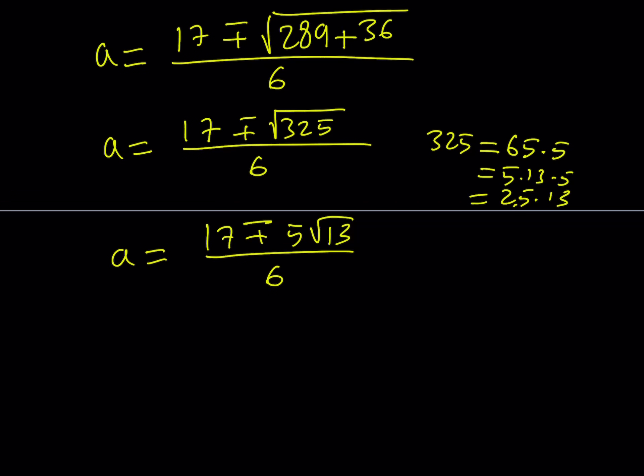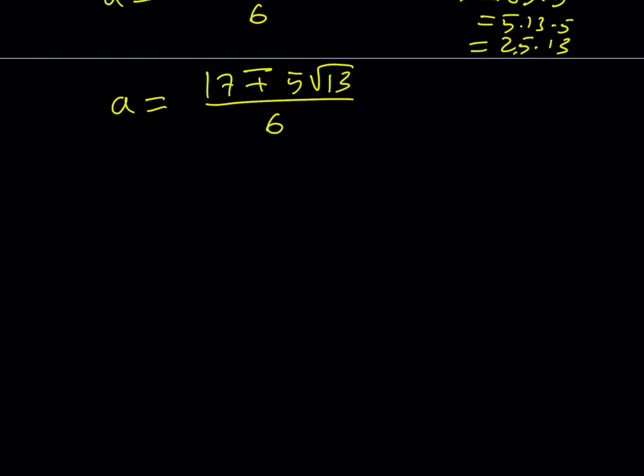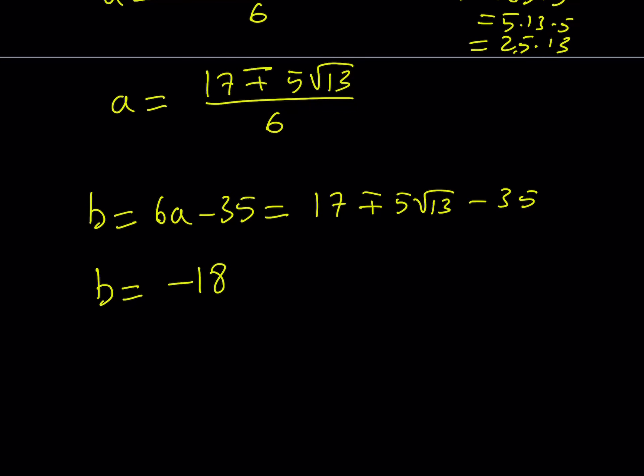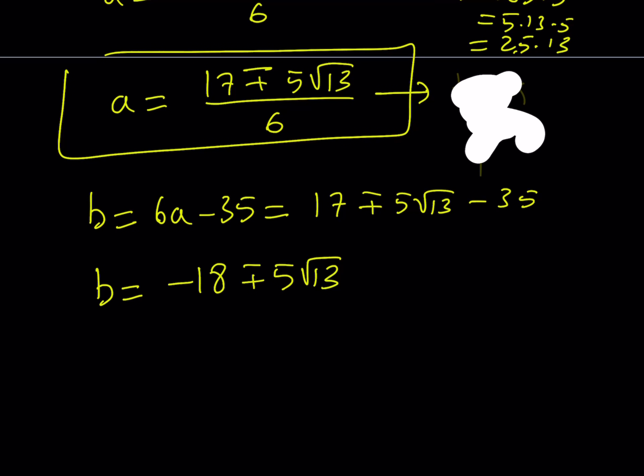Now for each value of a, we can substitute and get the value of b. b is going to equal 6a minus 35. If I take the positive value, when you multiply by 6 you're going to get this, and then subtract 35 from it. The b values are going to be negative 18 plus minus 5 root 13. So these are my a values, which is the value for tangent alpha, and this is my tangent beta value.